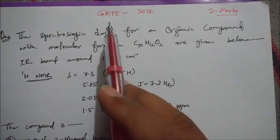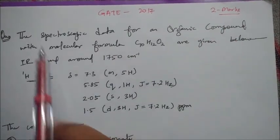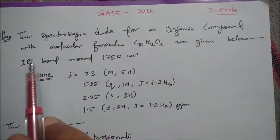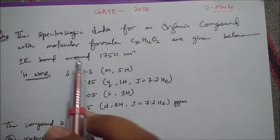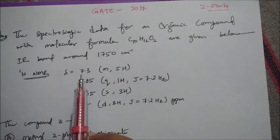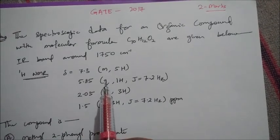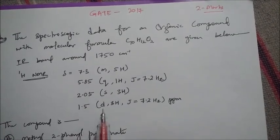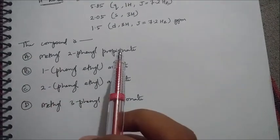Hello everyone. In this video we will solve a question from the GATE 2017 exam — it was a two-mark question. The question states that spectroscopic data for an organic compound with the molecular formula C10H12O2 are given. The IR band is around 1750 cm⁻¹, and the proton NMR chemical shift values are: 7.3 (multiplet, 5H), 5.38 (quartet, 1H) with a coupling constant value, and likewise other values are given.